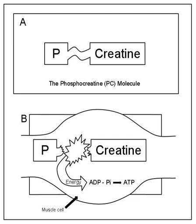Glycolysis takes place in the cytoplasm of normal body cells, or the sarcoplasm of muscle cells. The Krebs cycle is the second stage, and the products of this stage of the aerobic system are a net production of 1 ATP and 1 carbon dioxide molecule,